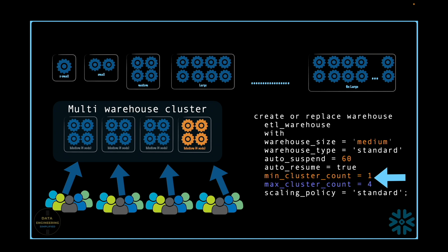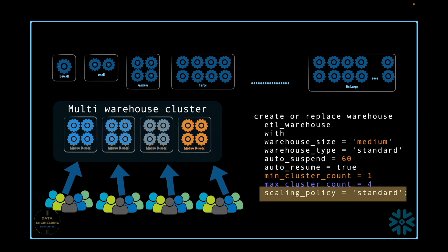All the properties like auto-resume and auto-suspend must be defined carefully, including scaling policy, while working with multi-cluster virtual warehouse. Multi-cluster virtual warehouse takes an additional parameter called scaling policy which has two values: standard vs economy.